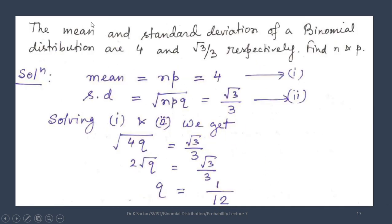Another question: The mean and standard deviation of a Binomial Distribution are 4 and √3/3 respectively. Find n and p. We know mean = np = 4, and standard deviation = √(variance) = √(npq) = √3/3. Since np = 4, substituting: √(4q) = √3/3. By calculation, we get q = 1/12.